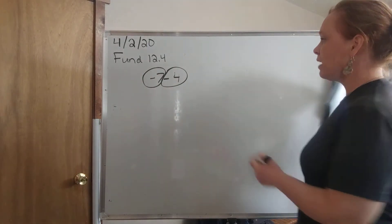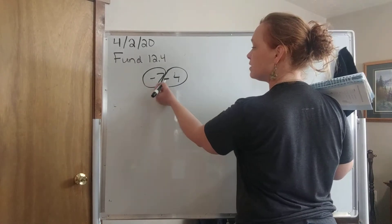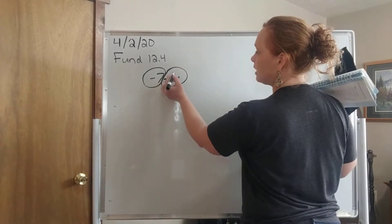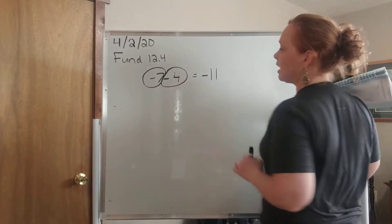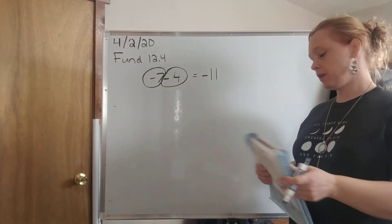And when I do that, I say okay, well, same rules apply. I have two of the same signs. So I'm actually going to add them together. 7, 8, 9, 10, 11. So I'm going to get 11 and then I'm going to keep the sign because they had the same signs.